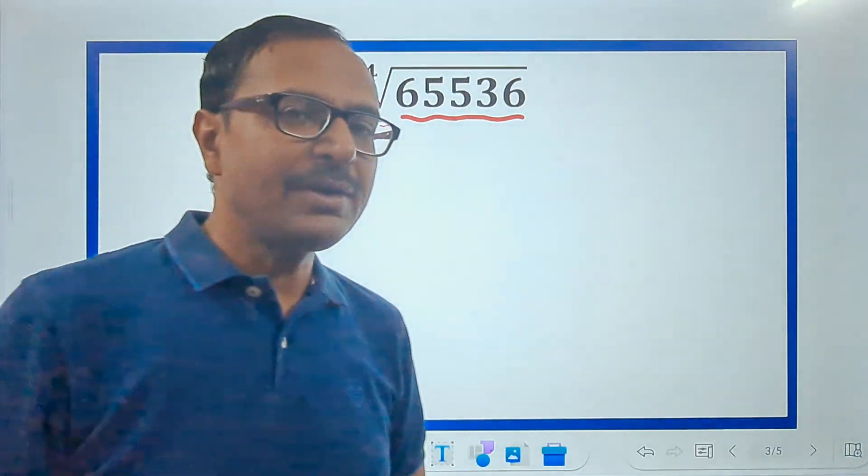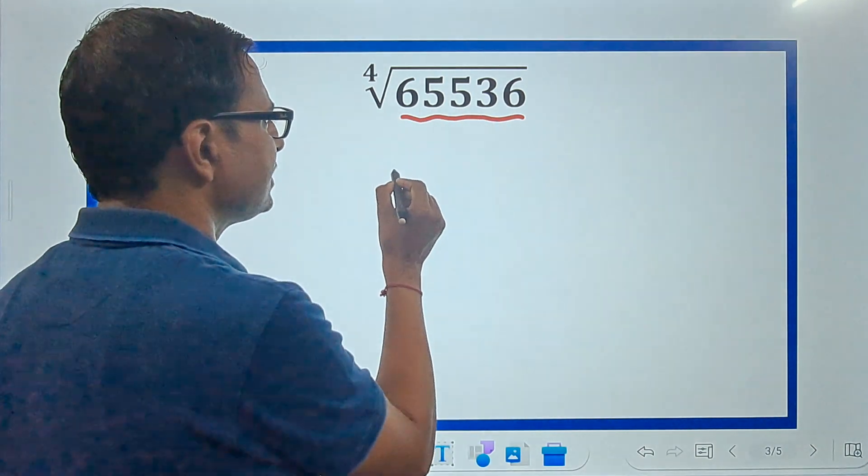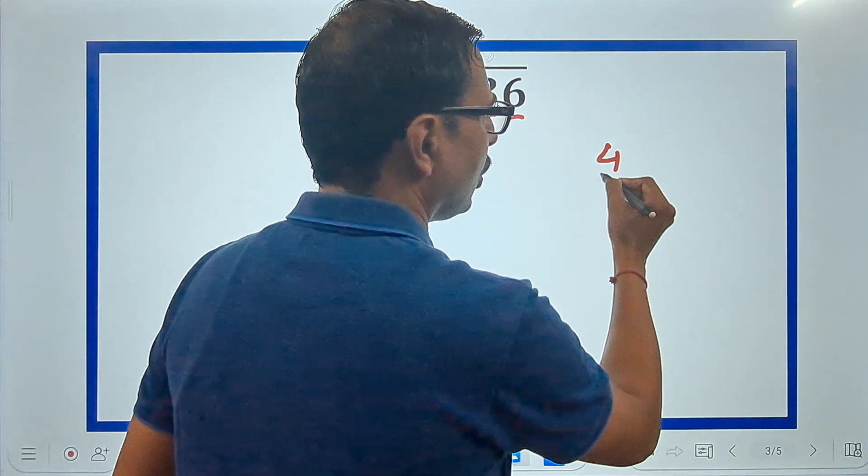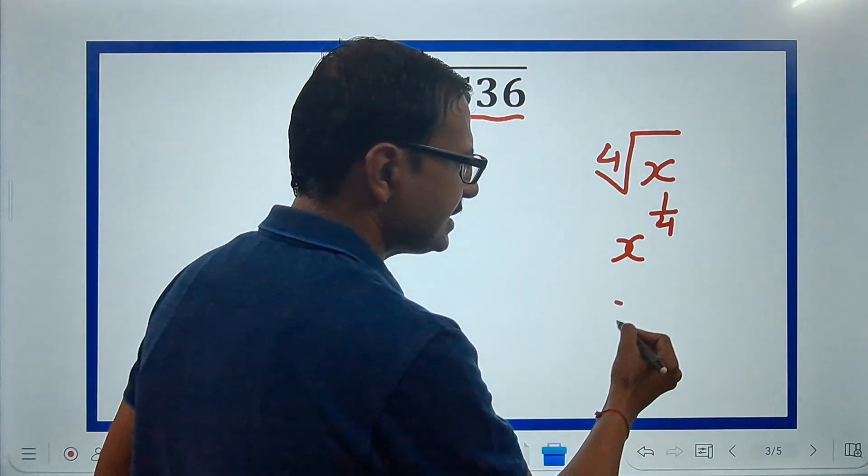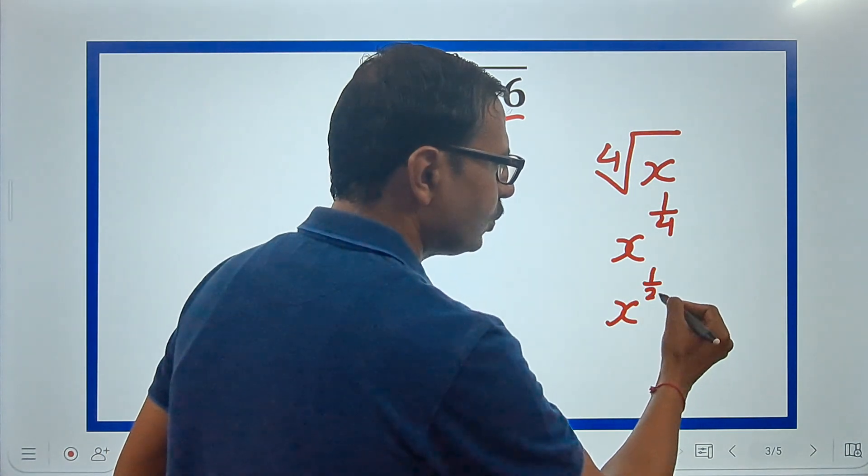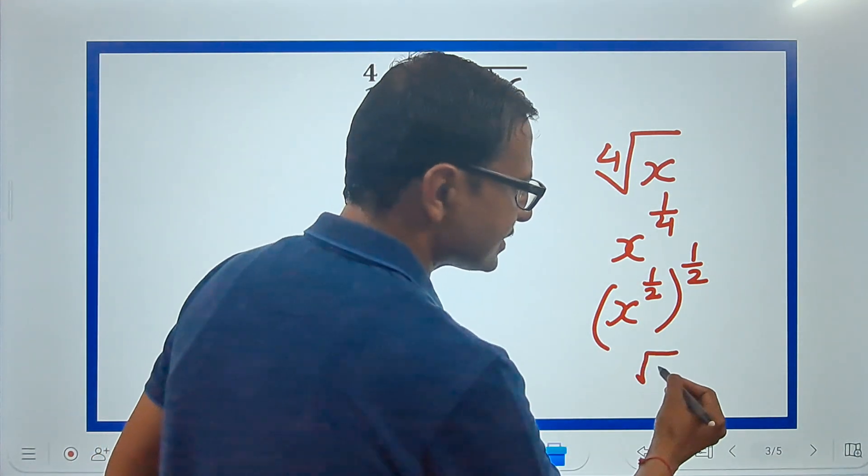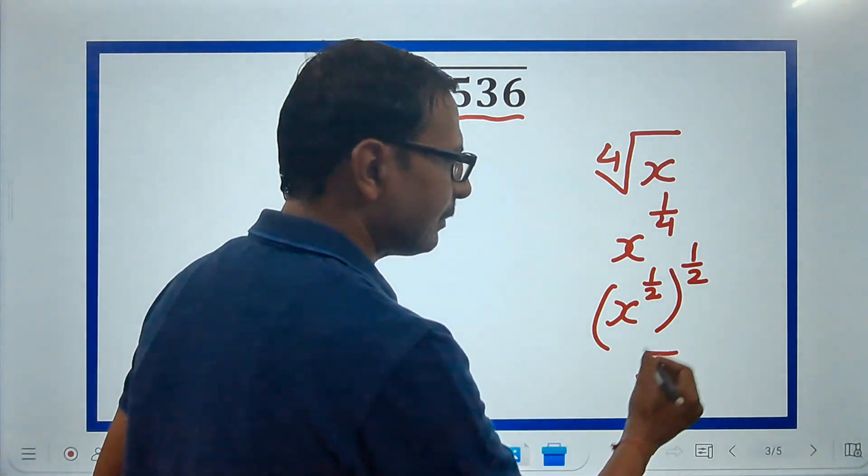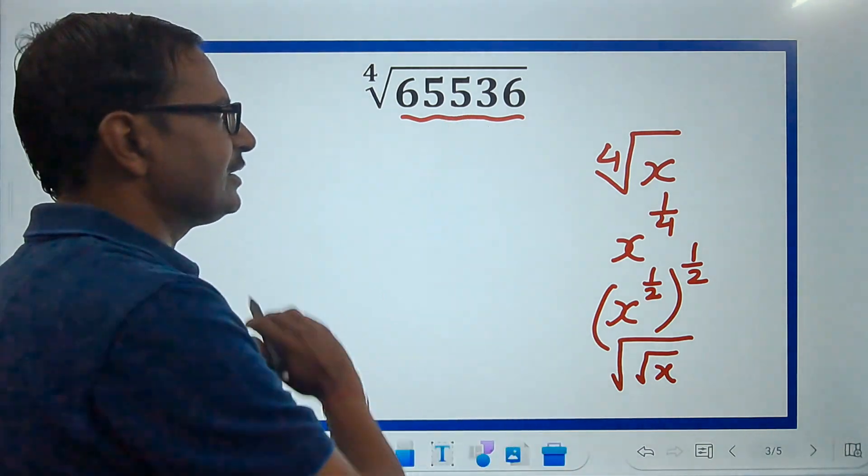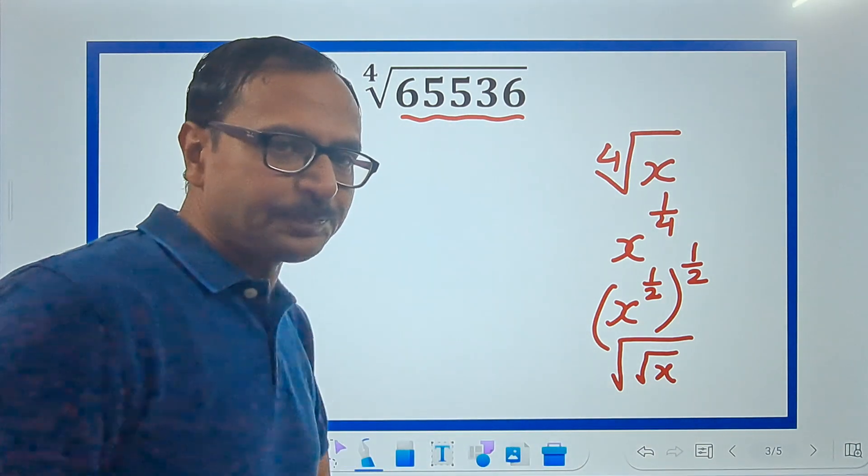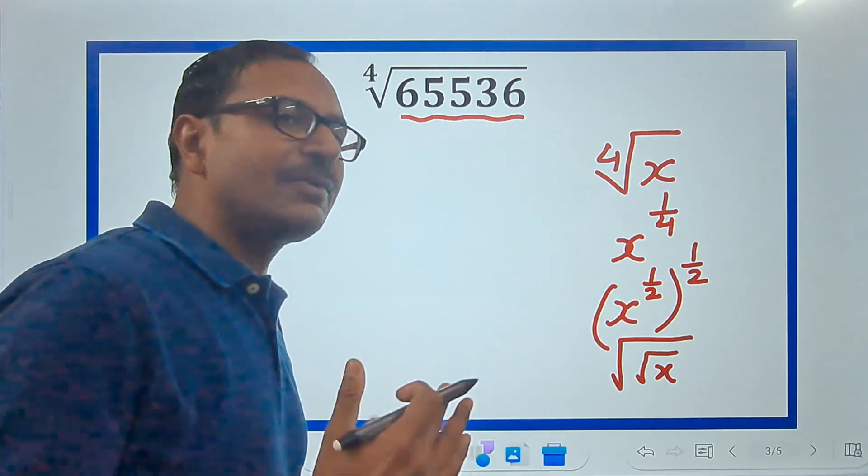When the number 65536 is a perfect fourth power, you can find it smartly. Fourth root of x means x raised to power 1/4, and that means x raised to power 1/2 raised to power 1/2. What is x raised to power 1/2? It is root x. So root x power 1/2 means square root of root x. If you can understand this, then finding the fourth root will be easy.